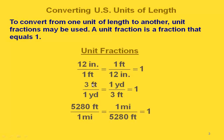The same thing applies with feet and yards. Since three feet equals one yard, we can write one over the other in either direction and get one. We can also do this with feet and miles — since 5,280 feet equals one mile, we can write a unit fraction in either direction so that we get one.